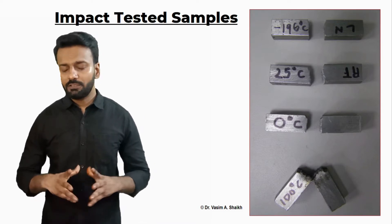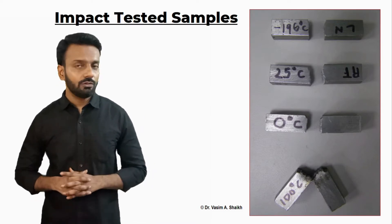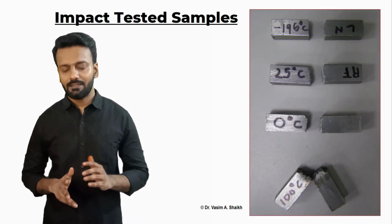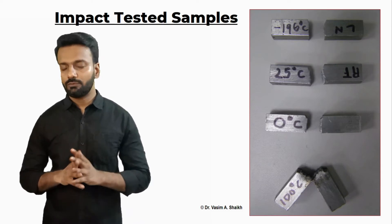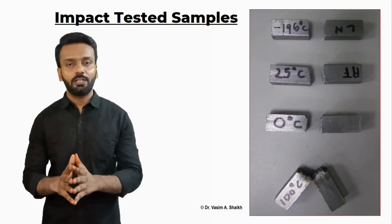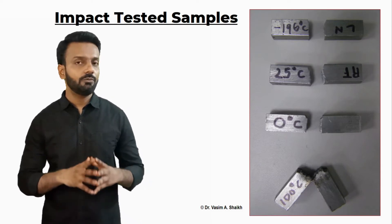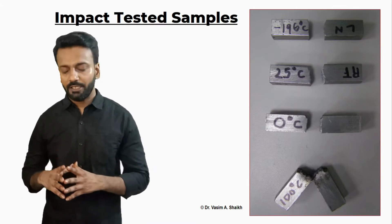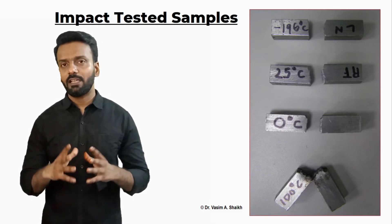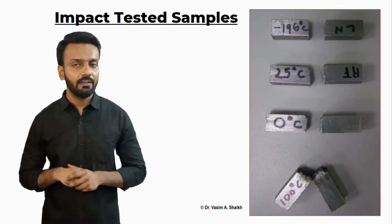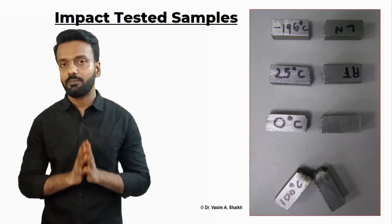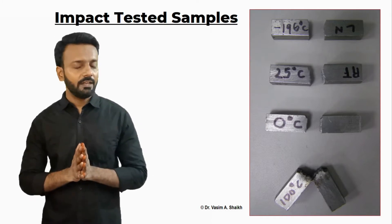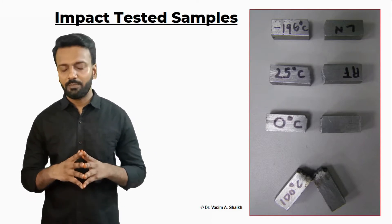Mainly what we see based on these materials is that as the temperature drops, the material goes from ductile to brittle transition, and we can easily relate to this just by looking at the specimens. The specimen at 100 degrees Celsius temperature